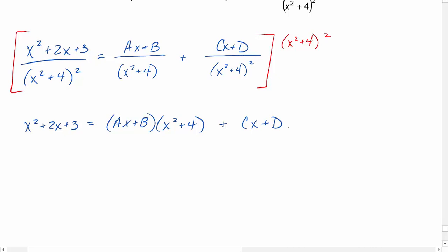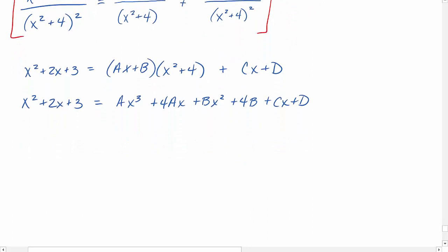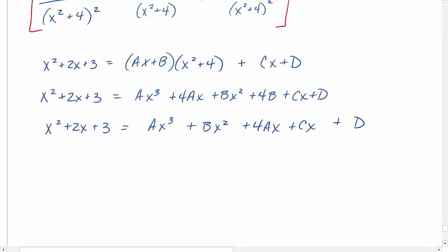We'll multiply out our right-hand side and combine any like terms. Ax to the third plus 4ax plus bx squared plus 4b plus cx plus d. Organizing our right-hand side and getting everything in descending order. Ax to the third plus bx squared. Now my linear terms plus 4ax plus cx. And then lastly, 4b plus d.